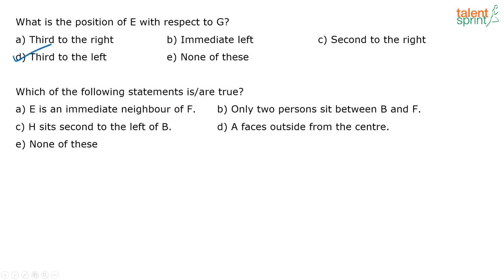Which of the following statements is or are true? E is an immediate neighbor of F — that is not true. Only two people sit between B and F — no, B and F are immediate neighbors. H sits second to the left of B — no, that is also not true. A faces outside from the center — that is true. So the correct answer is option D.